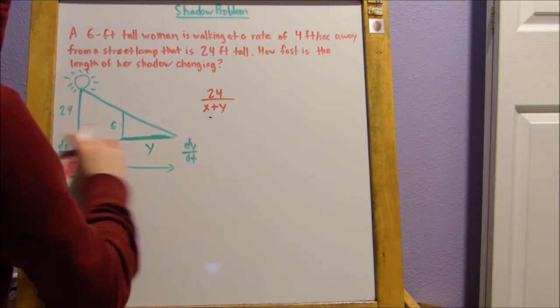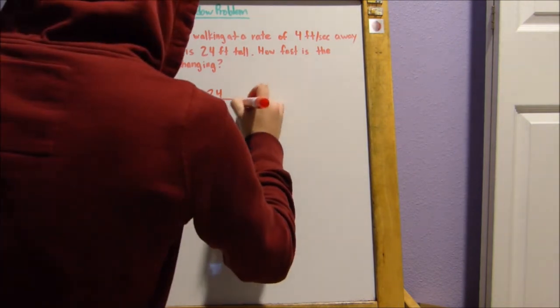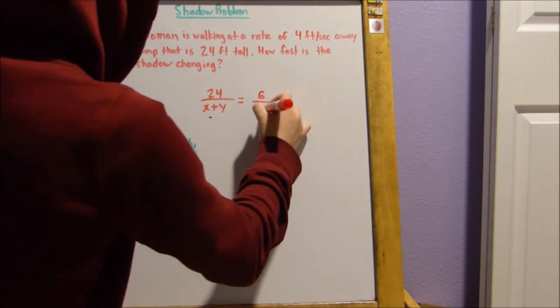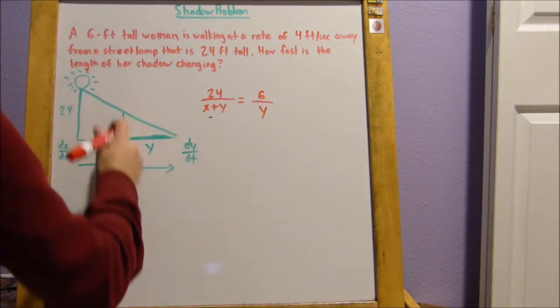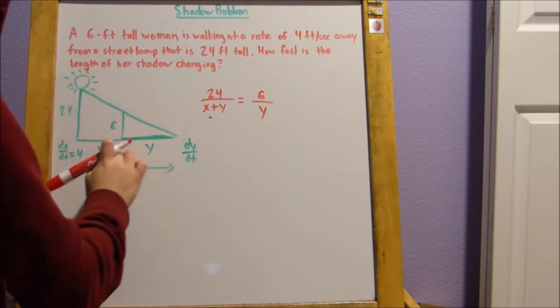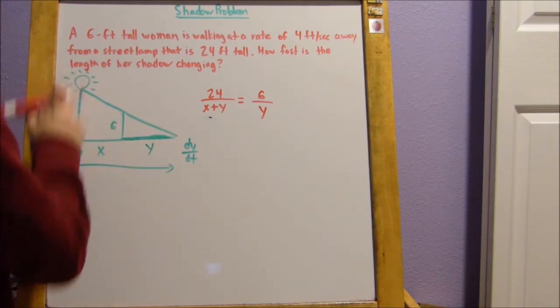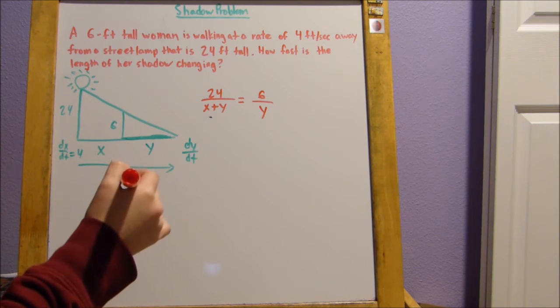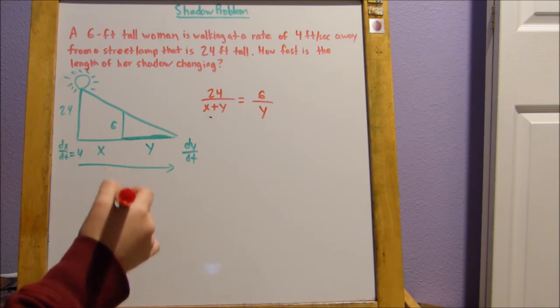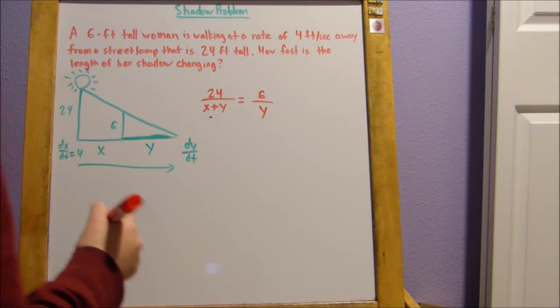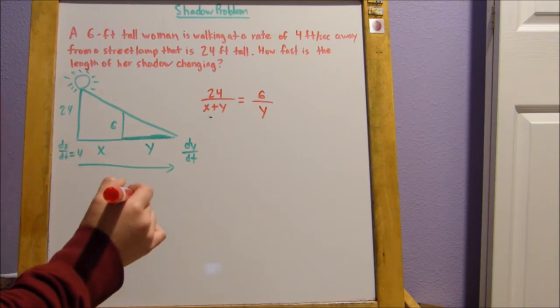That's what this side length is. This should be equal to 6 over y, this side length, right? Do you see the similar triangles and how we're doing this? 6, y, 24, x plus y. They're just two different triangles, two similar triangles, and their side length, the relation of this side length to this side length should be the same, right? That's the best way I can think of to explain that.